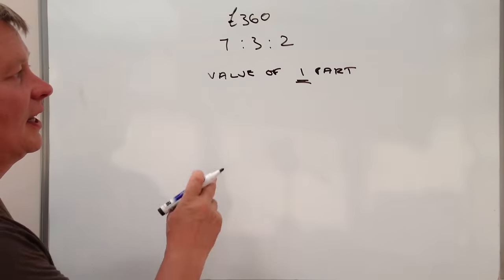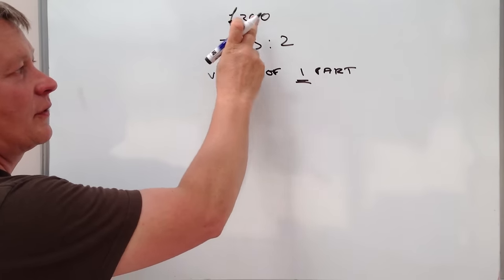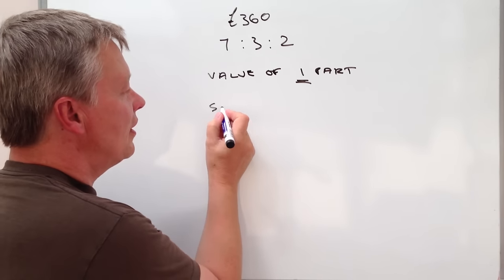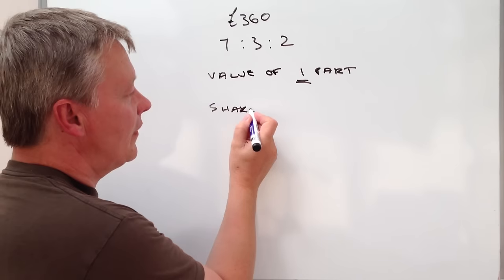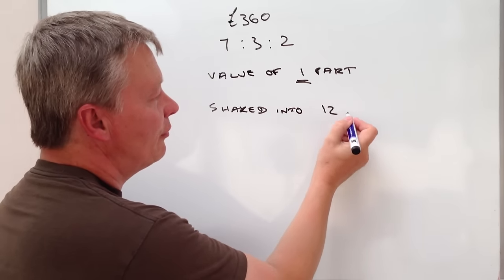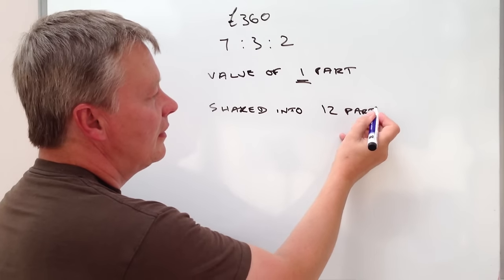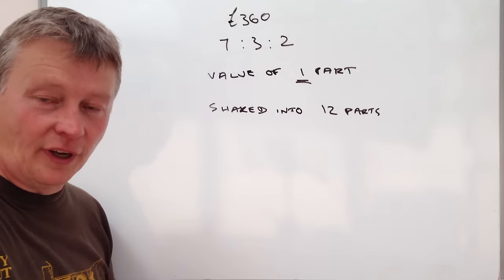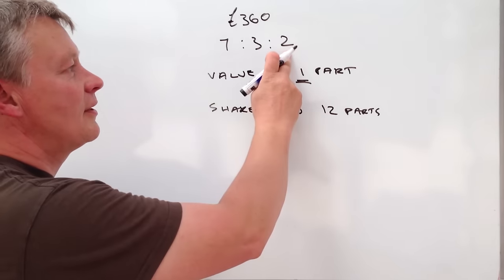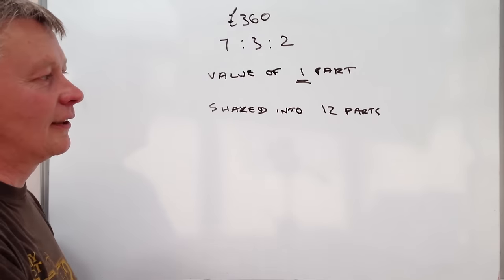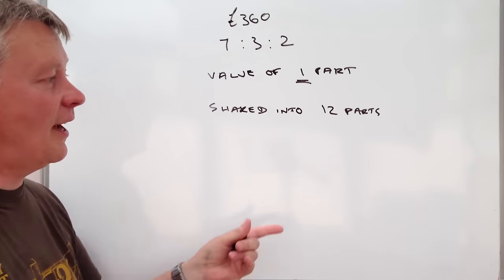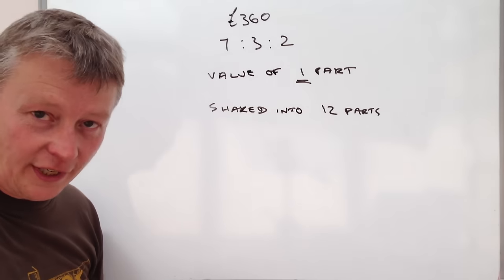So in this particular case, what we've done is we've got £360 and it's actually been shared into 12 parts. Because somebody's got seven parts, somebody else has got three parts and somebody else has got two parts. If you add that little lot together, then in order to share out the whole £360, then 12 parts have been given away.